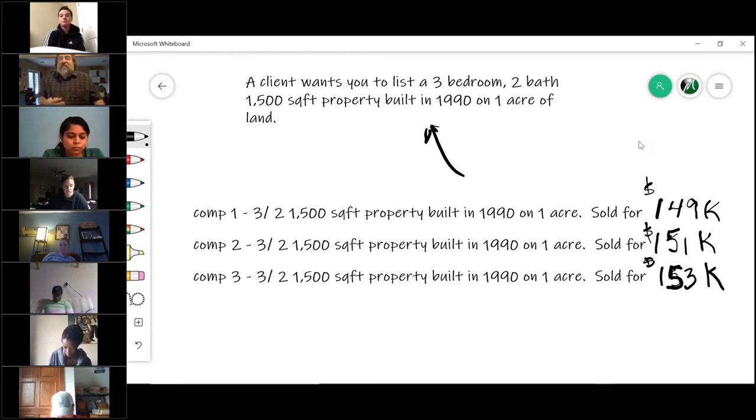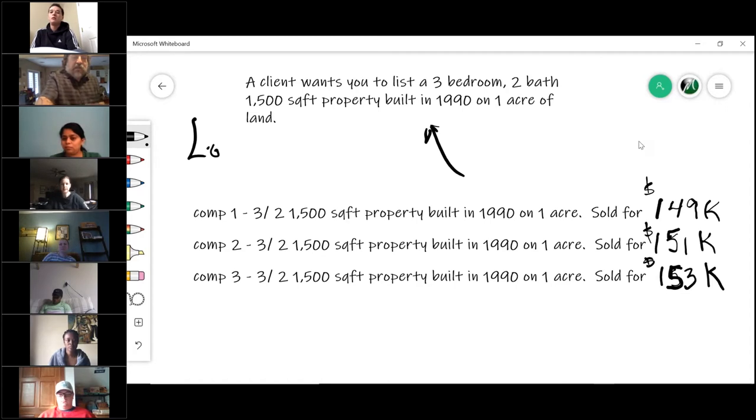Now when we look at the comps, there are several things we have to understand. First of all, this is an art. It is not a science. If you're a numbers person like me, this will pose a problem. I want things to work out perfectly based on numbers. That's not how this is going to work. This is an art, and the more you do, the better you get. Now, the first thing under the principle of substitution you look at is this thing called location.